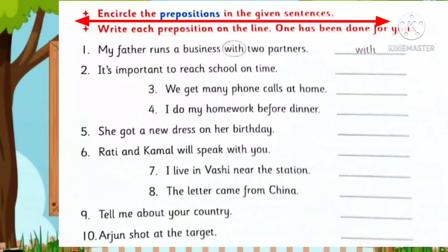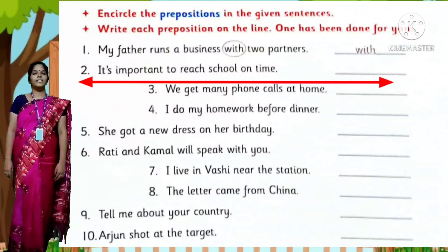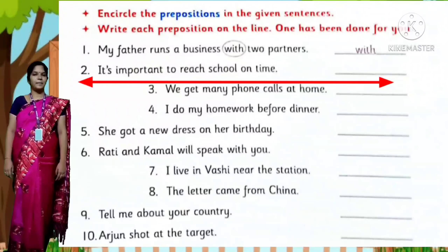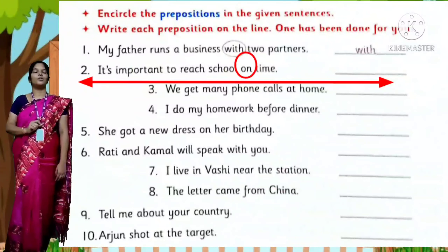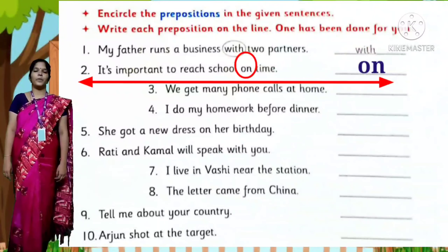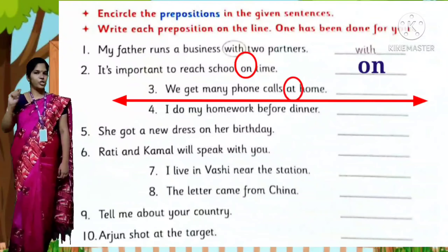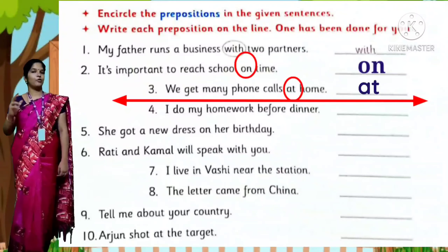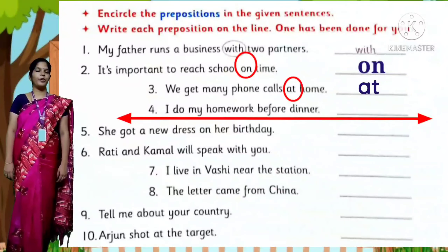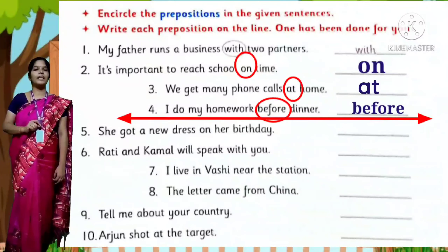Encircle the prepositions in the given sentences and write each preposition on the line. One has been done for you. It's important to reach school on time — circle 'on'. We get many phone calls at home — 'at' is the preposition, circle it. I do my homework before dinner — 'before' is the preposition, circle it.